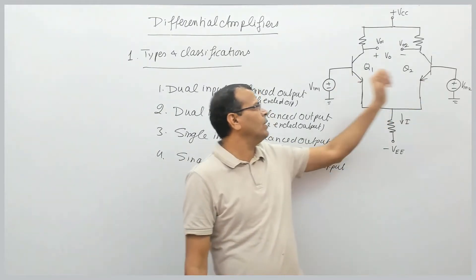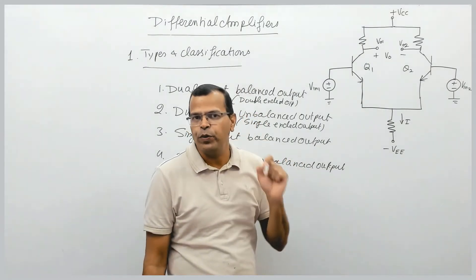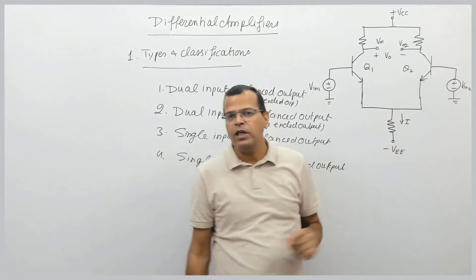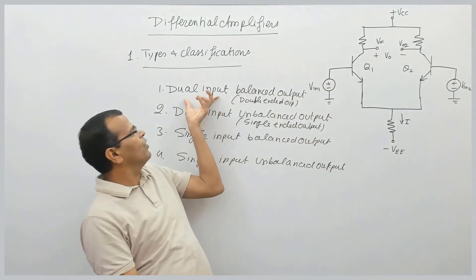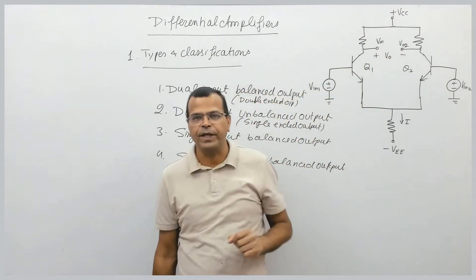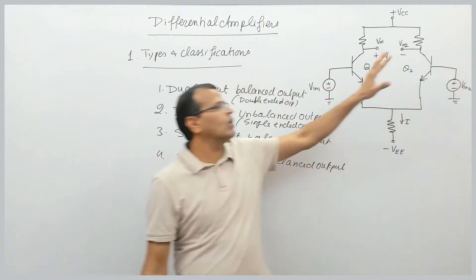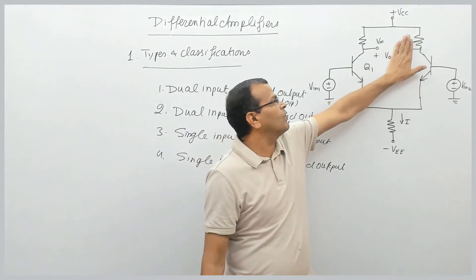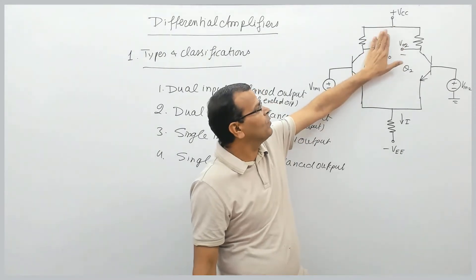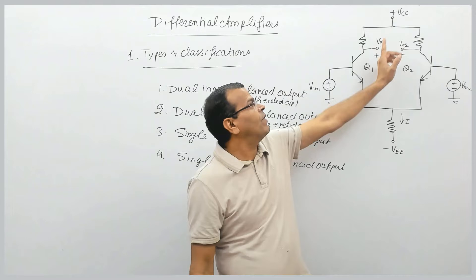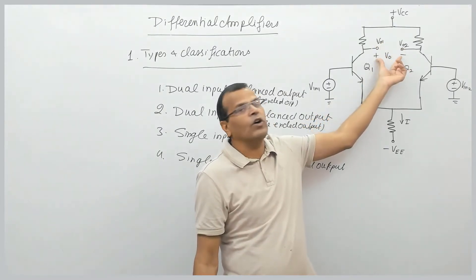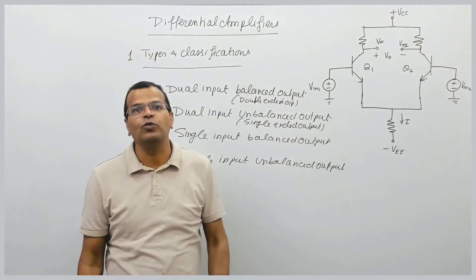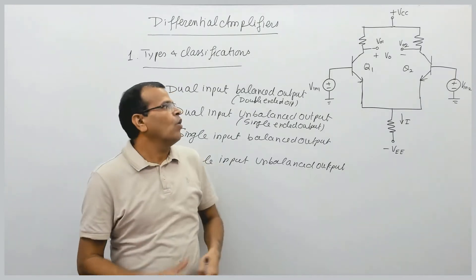I have two inputs applied to the base of both transistors — this is input one and this is input two. I take output from the collector terminals of both transistors. When you take both inputs, that is called dual input. When you take both outputs, that is called balanced output. When you take one input and the other is not used, that is called single input. When you take output from only one terminal, that is called single-ended output. When you take the difference of the two outputs — this minus this — that is called differential output or balanced output.